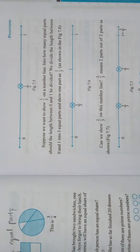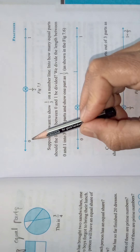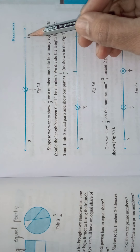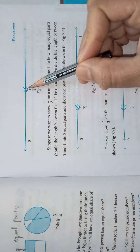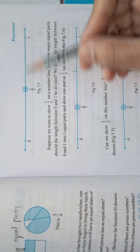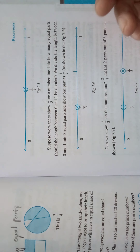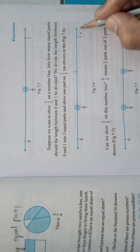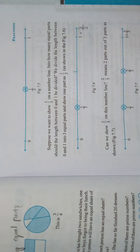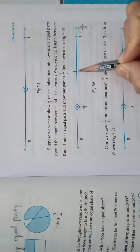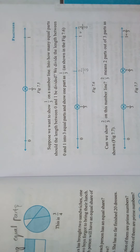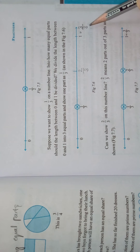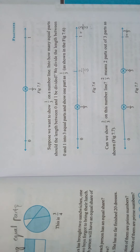Look here children — this is the number line. It starts from 0. If you consider 1, then 1 by 2 is half of that, and we can denote half like this on the number line. If you take 3 by 3, that is equal to 1. Then 1 by 3, 2 by 3, and 3 by 3 can be represented as points on the number line. In this way we can represent fractions on the number line.